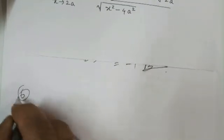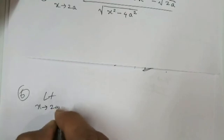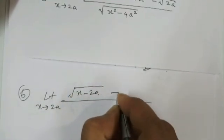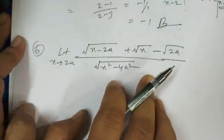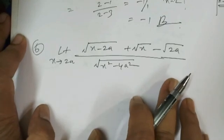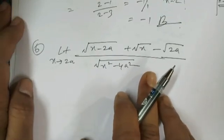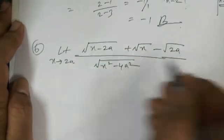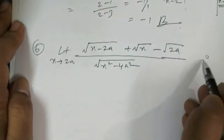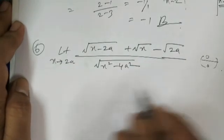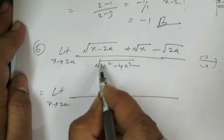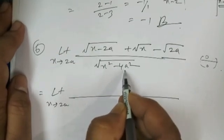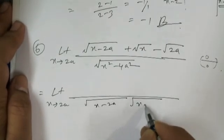Question number 6: limit x tends to 2a of [√(x - 2a) + √x - √(2a)] / √(x² - 4a²). Carefully observe this question — it appears very hard. If you put x = 2a in the numerator: (2a - 2a) = 0, √(2a) - √(2a) = 0, and x² - 4a² also gives 0. So this is 0/0 form.